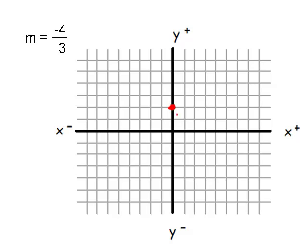That means that we will count down 1, 2, 3, 4. Down 4 and right 3, 1, 2, 3. So there's another point that's on the graph.